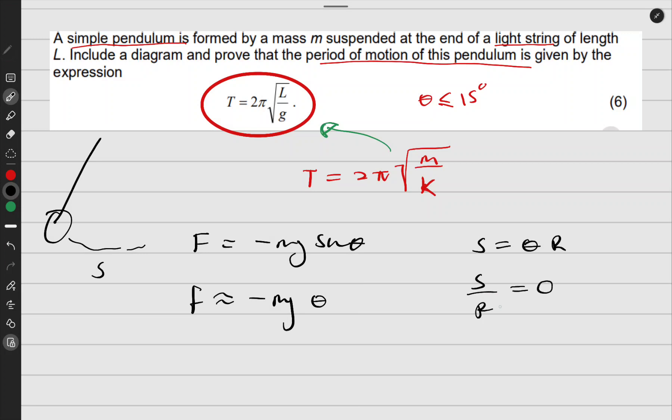Remember, our r for this case is the length, the radius about which the bob pivots around, so we'll have L. So that force will have to be approximately negative mg θ.